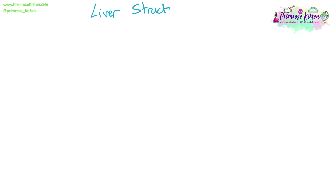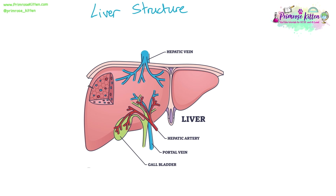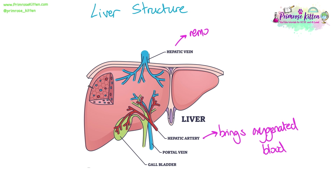Liver structure. You need to know all the vessels that go into and out of the liver. The first one is the hepatic artery, which brings oxygenated blood to the liver from the heart. Deoxygenated blood then leaves the liver through the hepatic vein and returns to the heart.